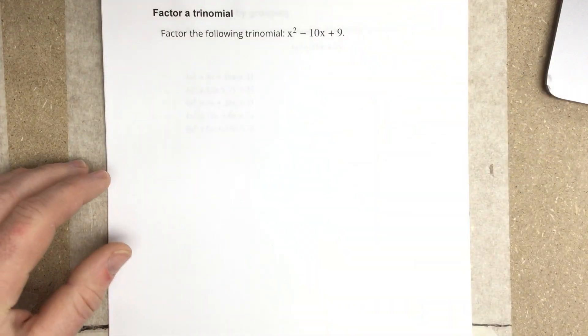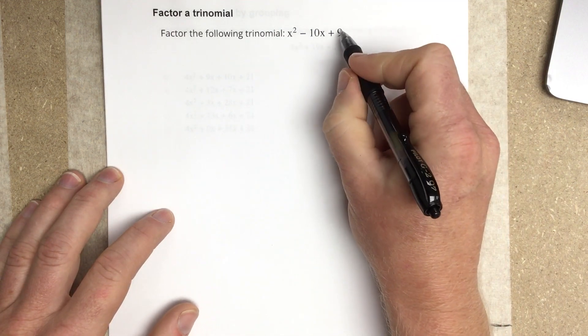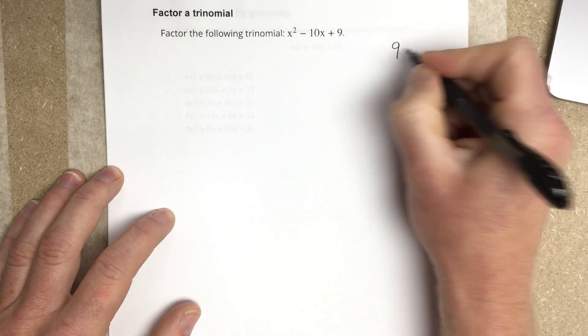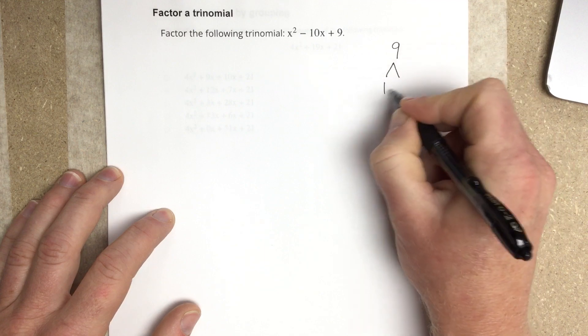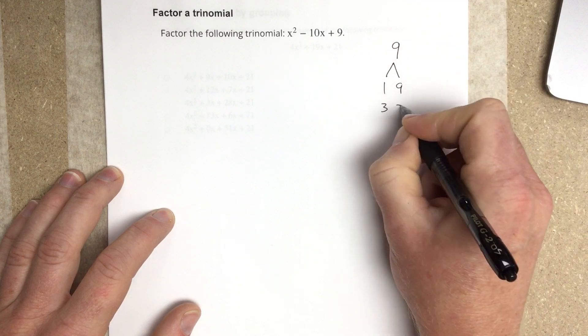Let's try another one. Let's write the factors of 9 out. So we write 9. The factors of 9 are 1 and 9 and 3 and 3.